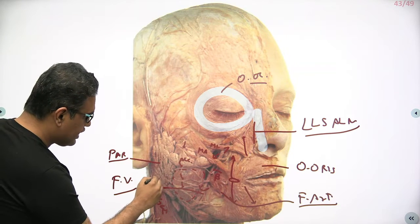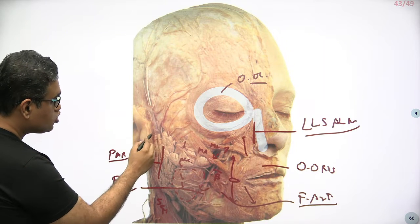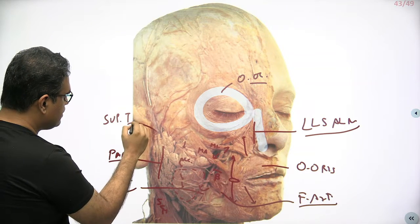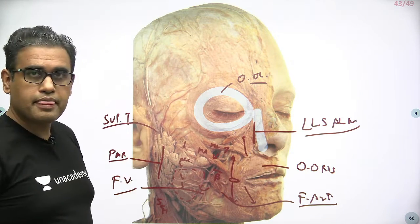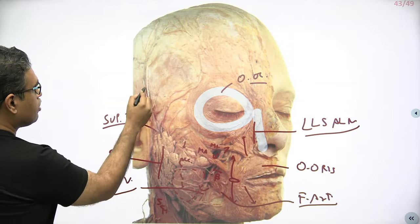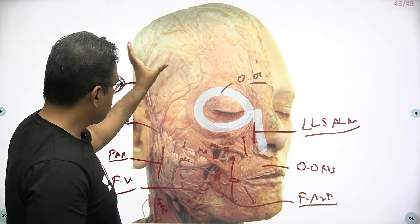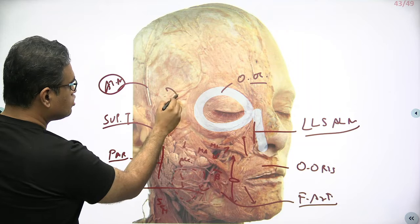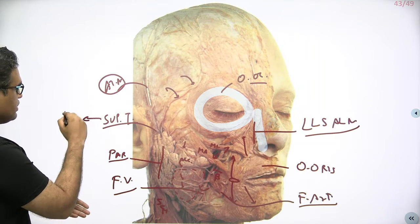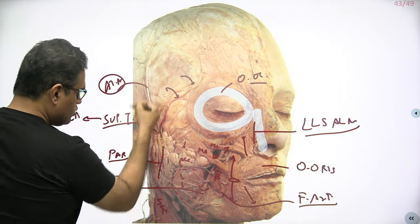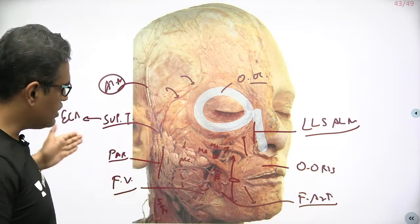Apart from this, the external carotid artery runs inside the parotid gland and gives off the superficial temporal artery. You can feel its pulsation in front of the tragus. Around this same area you will have the auriculotemporal nerve also — a branch of V3 supplying this area. These are the branches of the superficial temporal artery, which is a terminal branch of the ECA. The ECA terminates as the superficial temporal artery, but there is a bigger branch — the maxillary artery — which is not seen on the face as it runs medially inside.